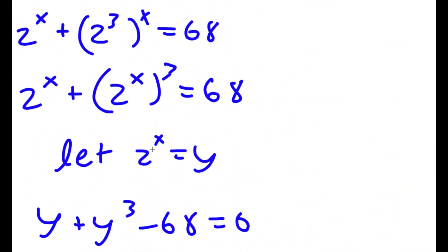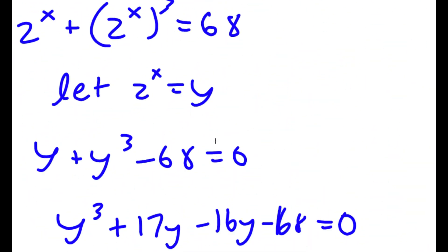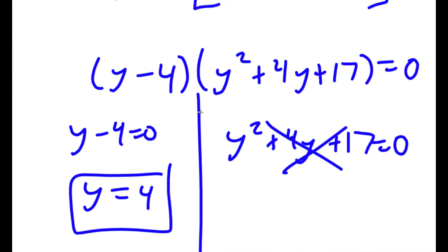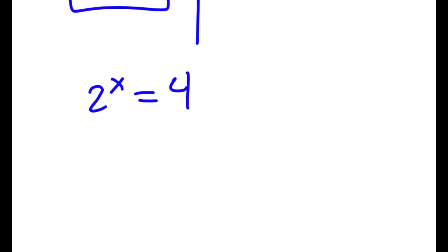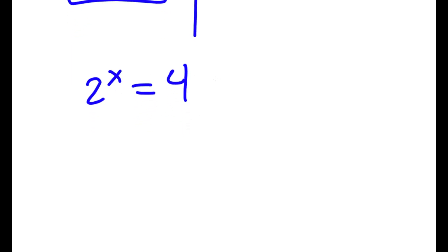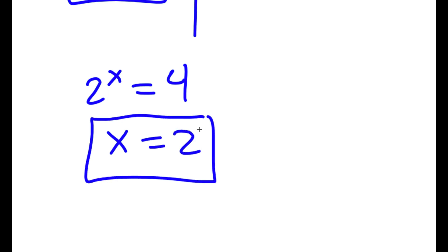Remember how we let 2 to the power of x equal y. So if y is 4, then 2 to the power of x equals 4. Since 2 squared equals 4, x is equal to 2. That is my solution to this problem.